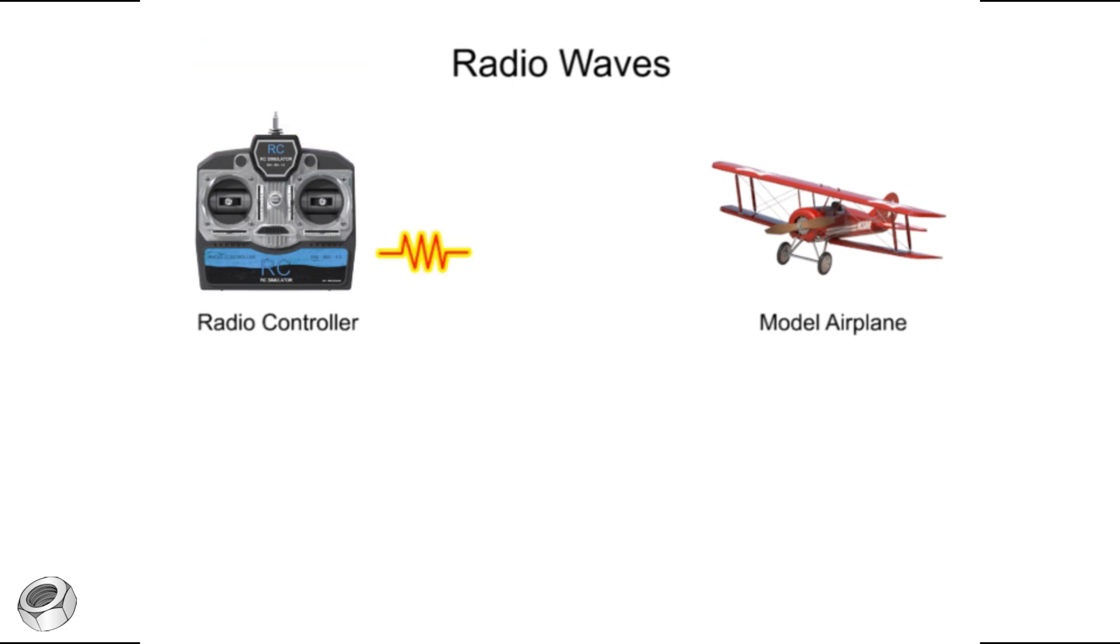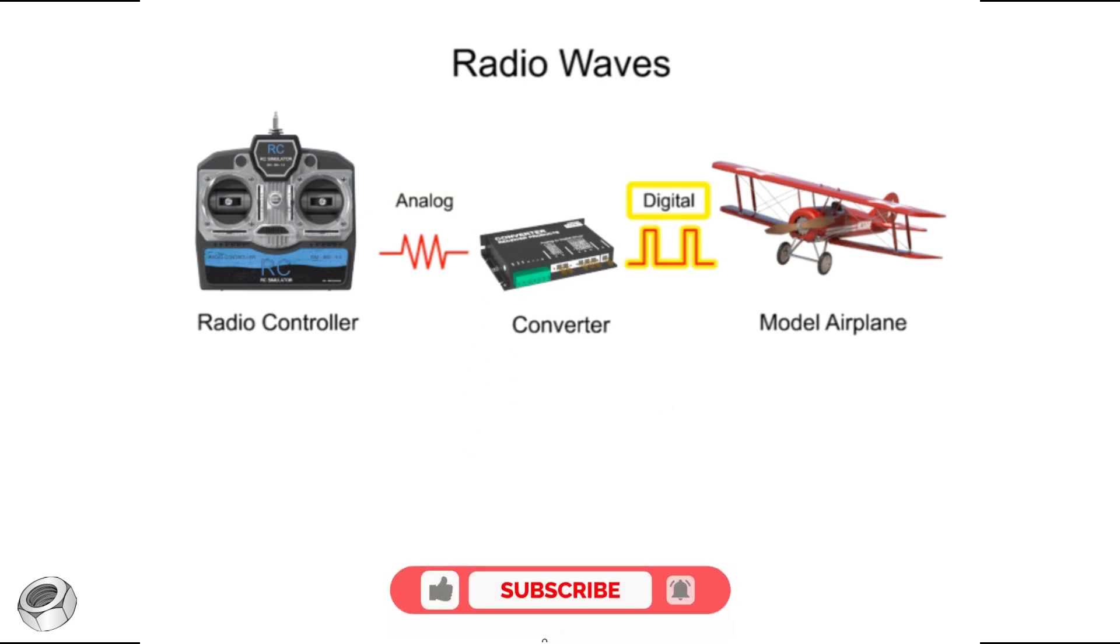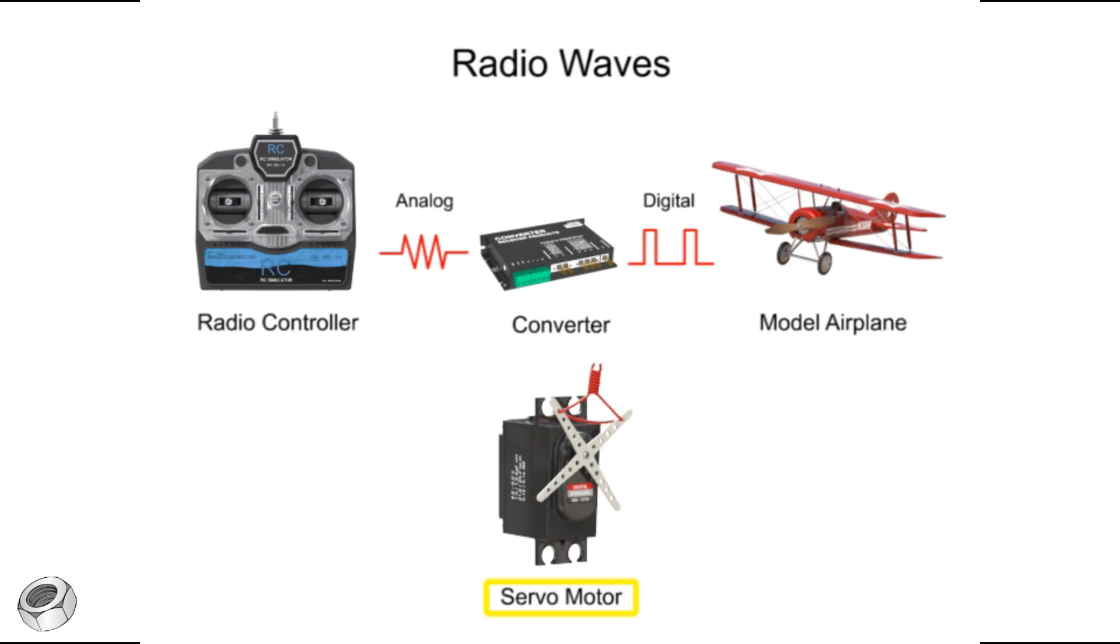These radio wave pulses are transmitted to a receiver in the plane and converted from analog to digital pulses. These digital pulses are delivered to a servo motor, instructing it to hold a particular throttle or flap position.